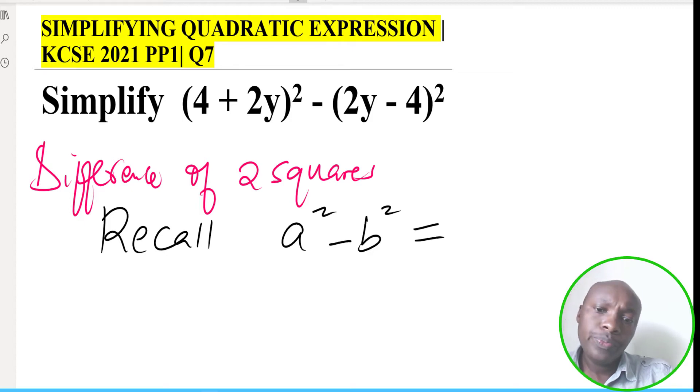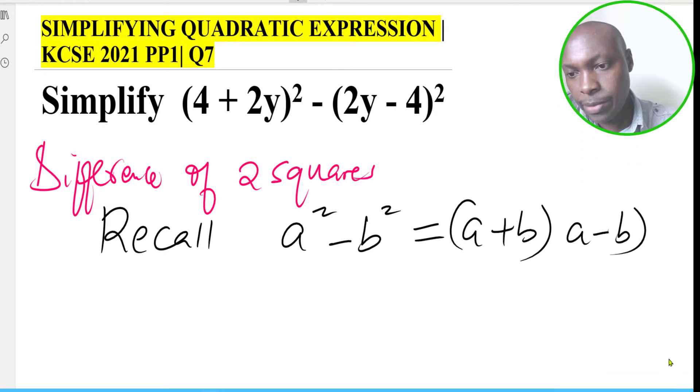When you factorize this you should get (a + b) multiply by (a - b), so this is what we refer to as difference of two squares. There are two squares, this is a square and this is a square, and you're getting the difference of those two squares.